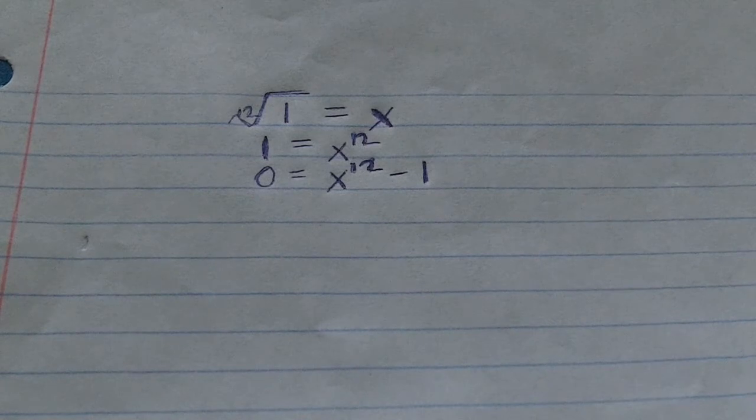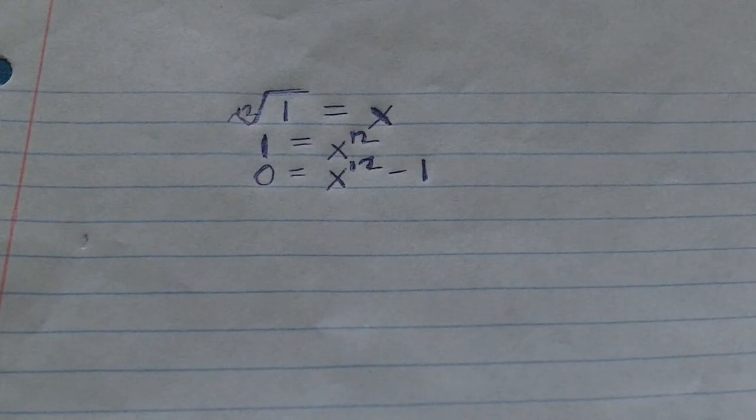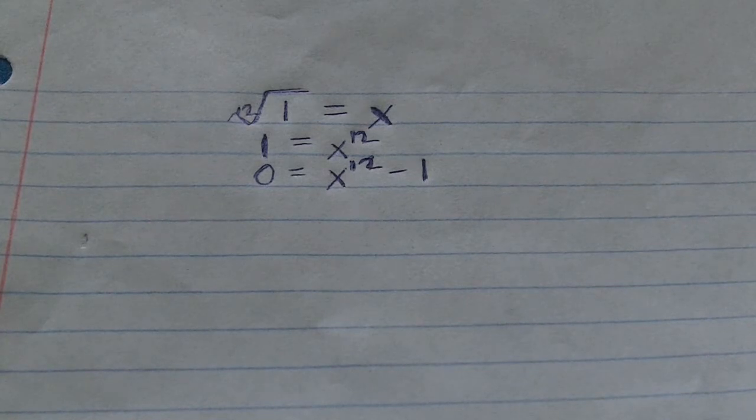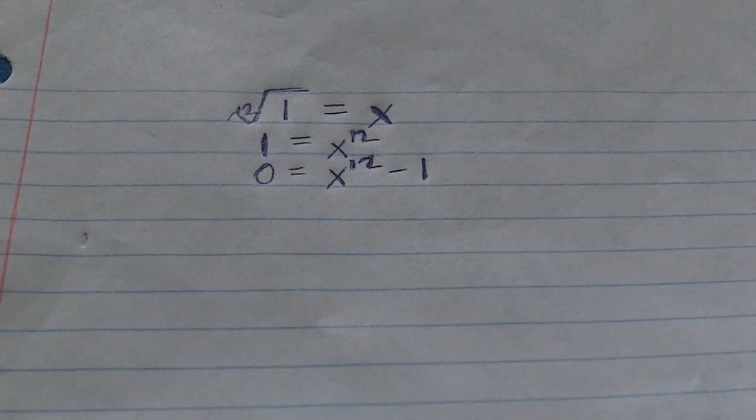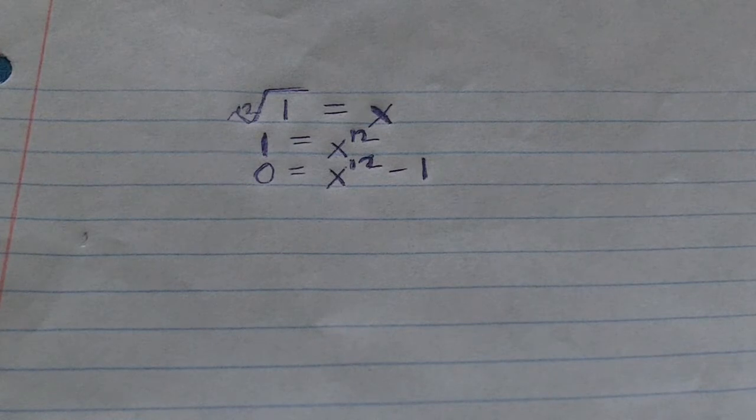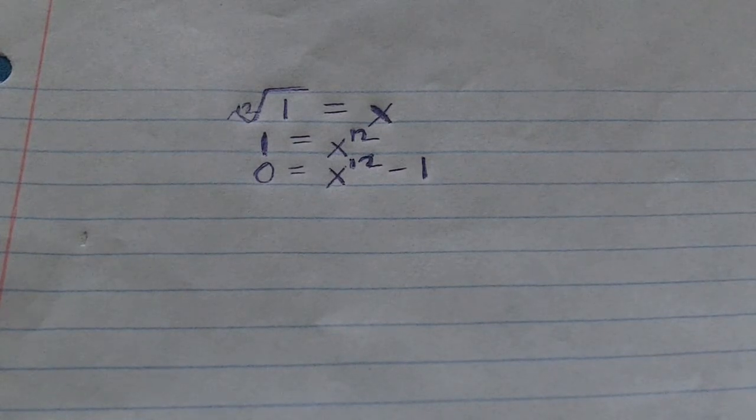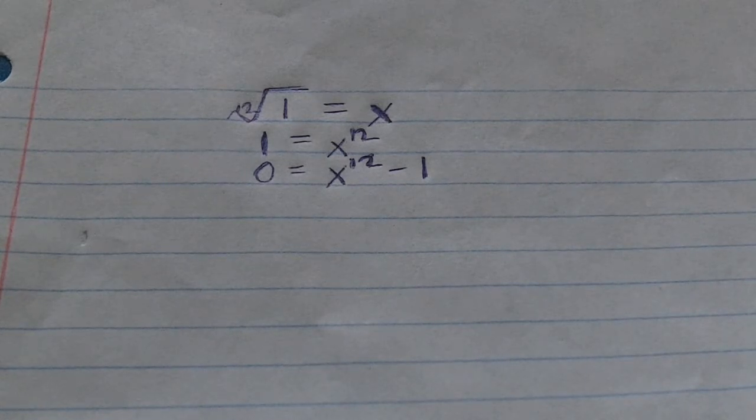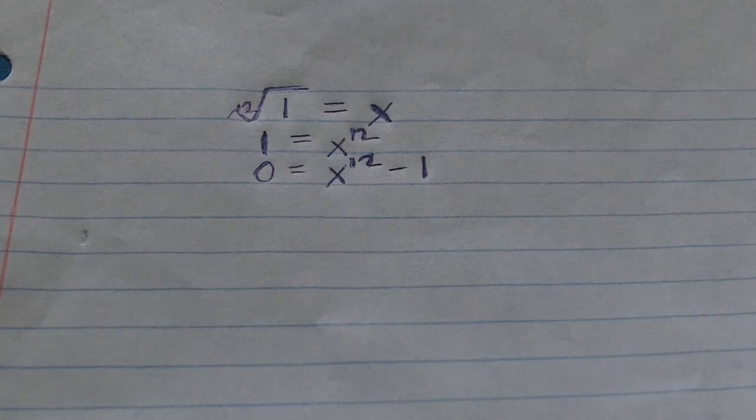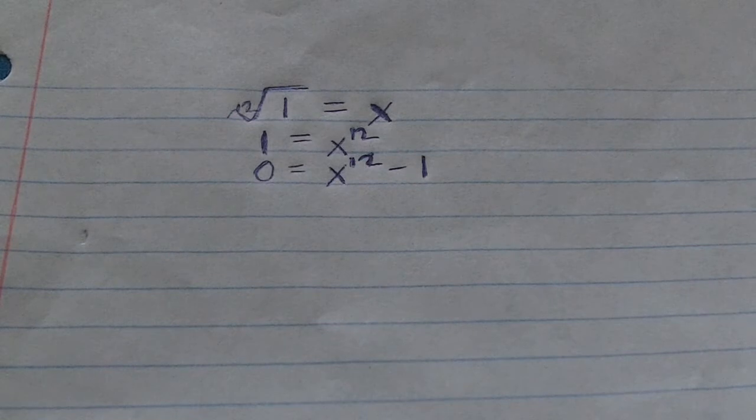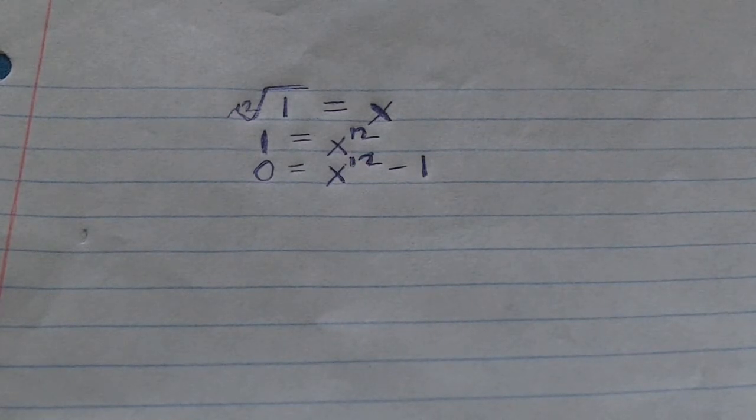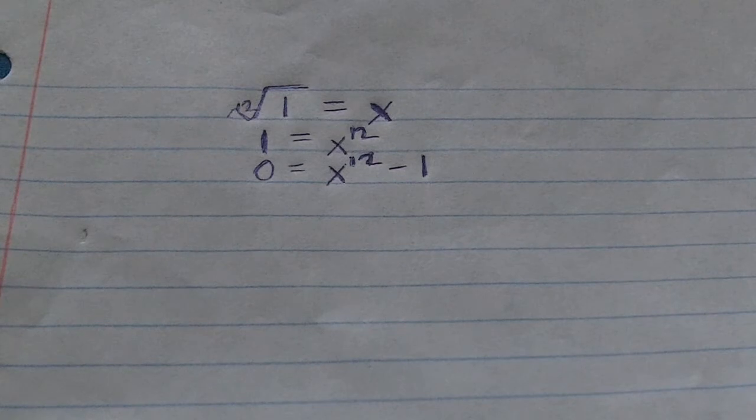And as I hopefully mentioned before in many of my other videos, when we have a polynomial whose coefficients are all contained in the set of complex numbers, we know that the number of solutions within C is precisely equal to the degree of the polynomial, so in this case twelve. So there are twelve solutions in total to this polynomial, which is extremely interesting.